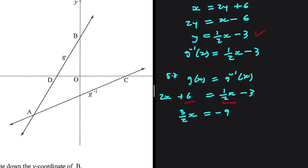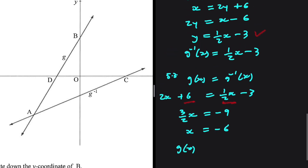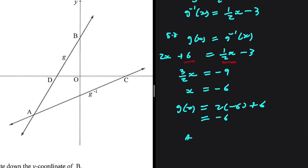Taking plus 6 to the left-hand side, I get minus 3 minus 6, which is minus 9. Now I have to divide both sides by 3 divided by 2. If I do that, I get x equals minus 6. So that is the x value at a. Now I just have to substitute x equals minus 6 into g of x. I get 2 multiplied by minus 6 plus 6, so 2 multiplied by minus 6 is minus 12, and minus 12 plus 6 is minus 6. So the coordinates of a are minus 6 and minus 6.